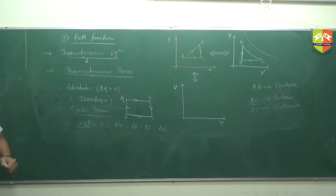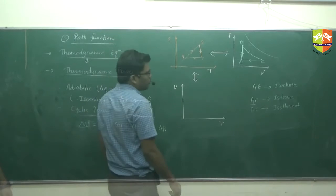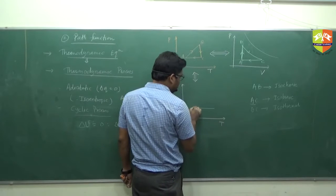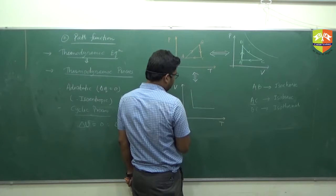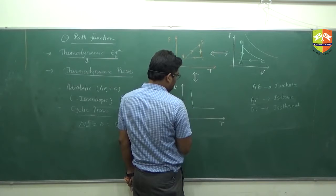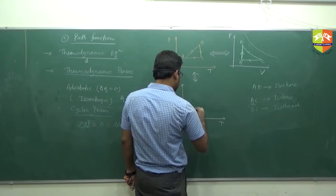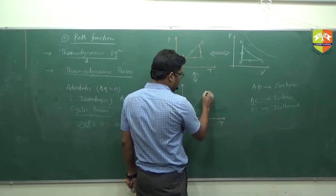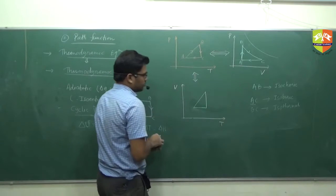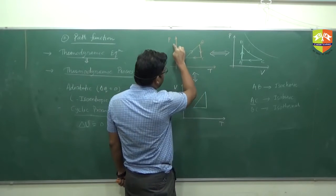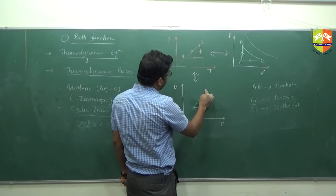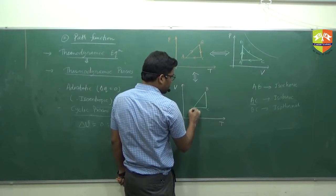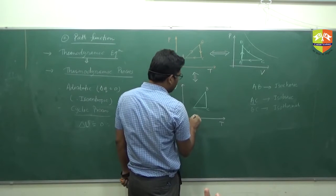Now can you do the VT graph? Try this. Isochoric is A to B — so draw the A to B graph here. B to C is isothermal, so B to C is isothermal on the VT graph. And C to A is isobaric — isobaric is constant pressure, so it will be on that side.